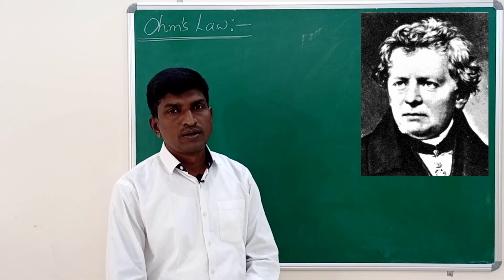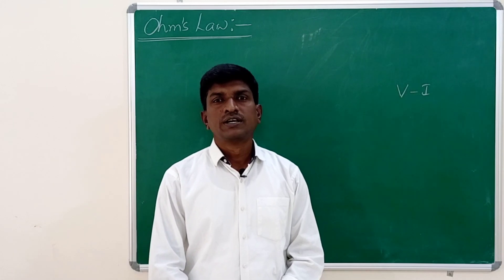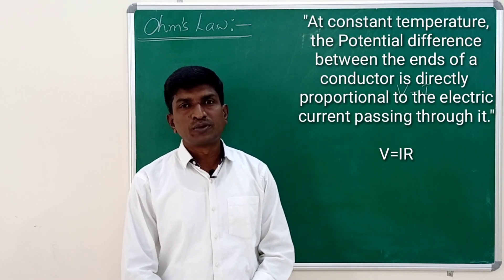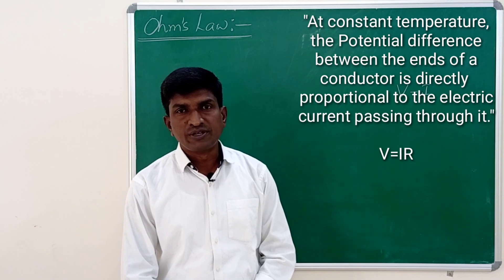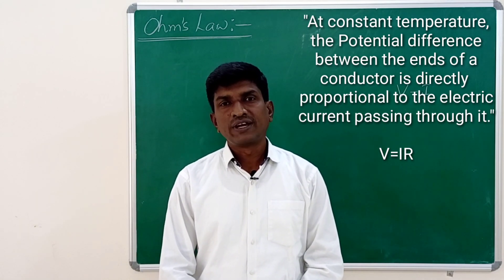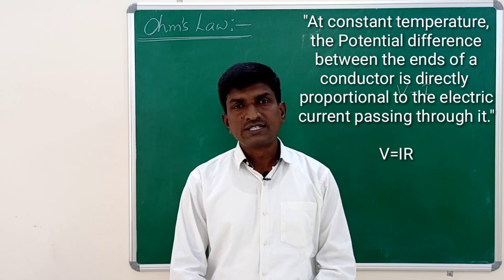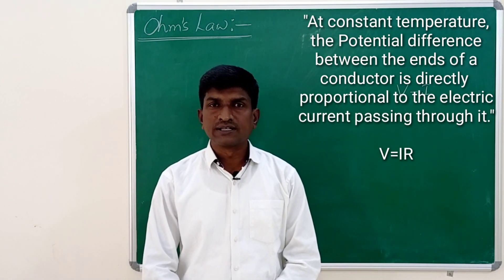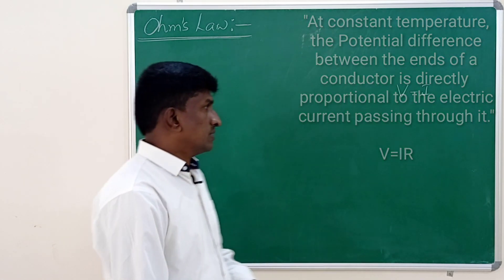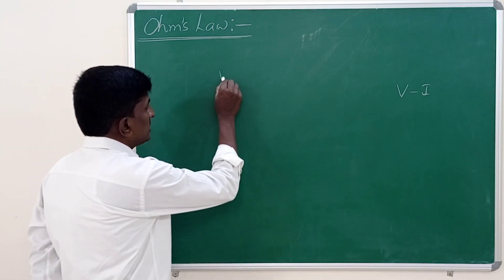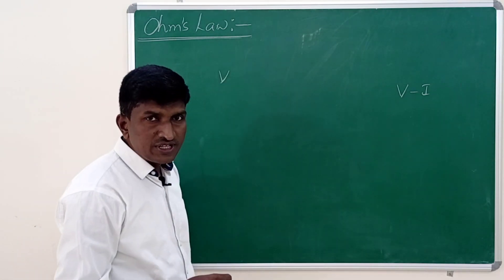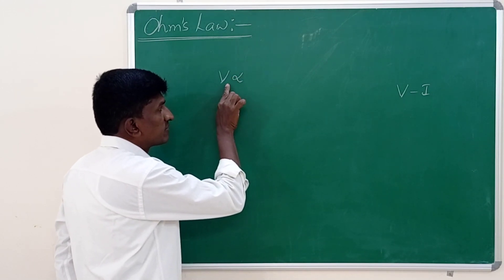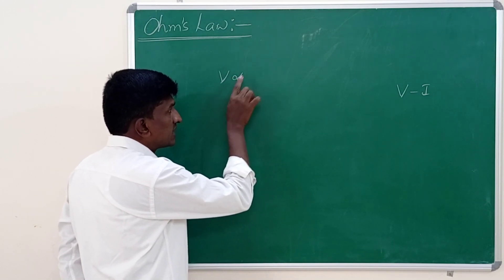Ohm's Law states that at constant temperature, the applied potential difference between two ends of any conductor is directly proportional to the current flowing in the conductor. Here, let us say V is the potential difference, and at constant temperature, that potential difference is directly proportional to the current flowing in the conductor.